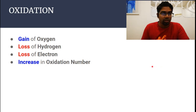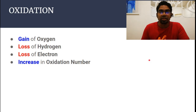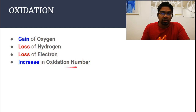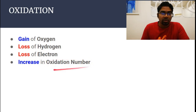Oxidation and Reduction is a large topic. In this video we will only be covering the basic definitions of oxidation and reduction. We can look at oxidation and reduction in four ways: through the gain or loss of oxygen, gain or loss of hydrogen, gain or loss of electrons, and the increase or decrease in the oxidation number of the element. Oxidation number in itself is a big topic — I will cover that in a separate video.